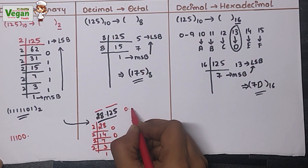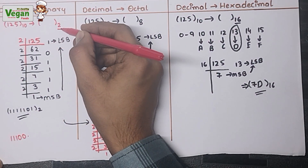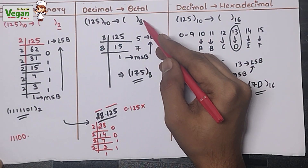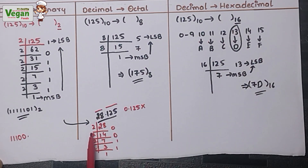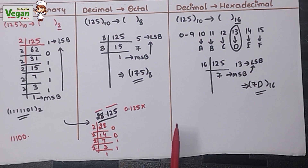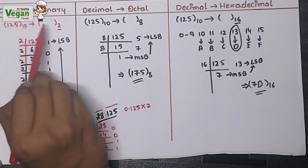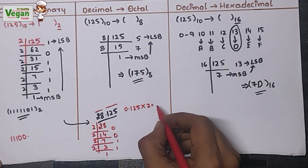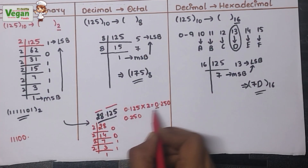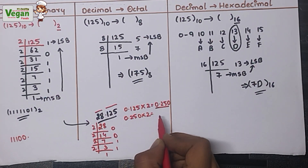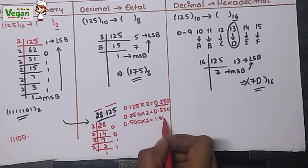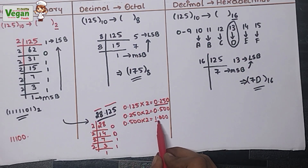For the fractional part 0.125, multiply by the base you are converting to. For binary, multiply by 2. 0.125 × 2 = 0.250. Then 0.250 × 2 = 0.500. Then 0.500 × 2 = 1.000. Stop when you get a value of 1 or greater than 0 before the decimal point.